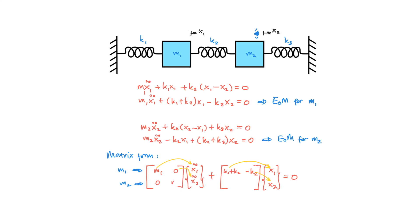For the second row, we have m2 multiplied by x2 double dot, so we put m2 as the fourth component of the first square matrix. For the second square matrix, there is minus k2 multiplied by x1, and k2 plus k3 multiplied by x2.